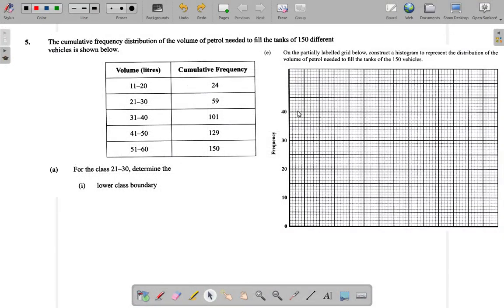Question 5e says on the partially labeled grid below, construct a histogram to represent the distribution of the volume of petrol needed to fill the tank of 150 vehicles.